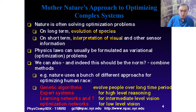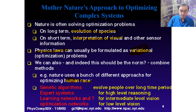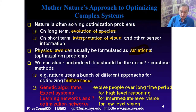Physics laws can usually be formulated as variational methods, which are optimization problems. Often you combine methods — for instance, trying to build a human race: in the short time scale we're using image processing and deep learning, and on the long time scale we're using genetic algorithms. Expert systems are an example of people reasoning with their brains — having a debate, comparing trade-offs — which is a rather different type of optimization from a direct optimization problem.